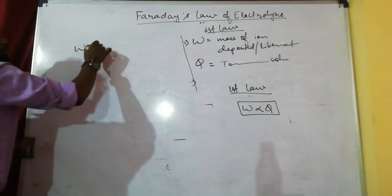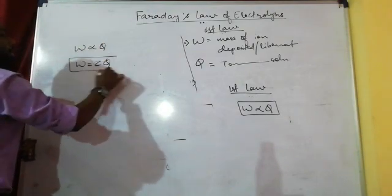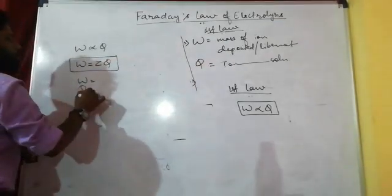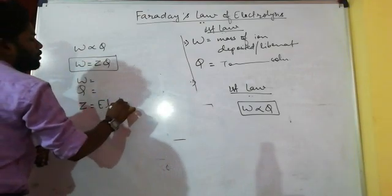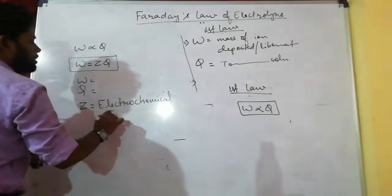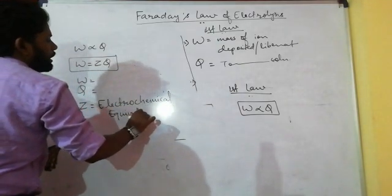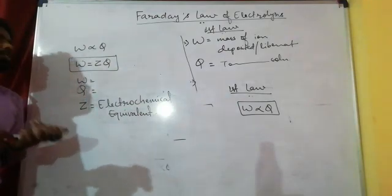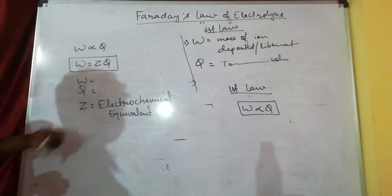To remove the proportionality, we introduce a constant Z, giving us W = Z×Q. Here W is the mass of ions deposited at the electrode, Q is the total charge passed in the solution, and Z is called the electrochemical equivalent.